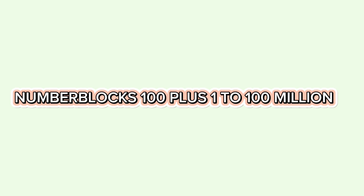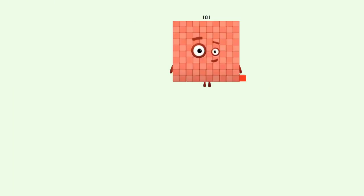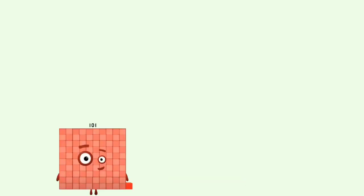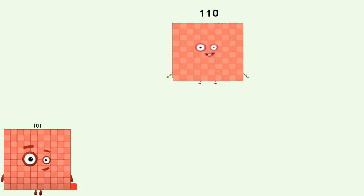Number blocks: 100 plus 1 to 100,000,000. 100 plus 1 equals 101. 100 plus 10 equals 110.